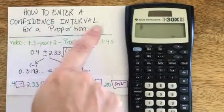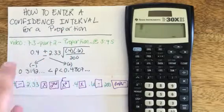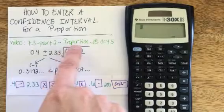Here's how to enter a confidence interval for a proportion, or perhaps you call it a percent or a portion. This is off of my video 7.3, part 2 on proportions.